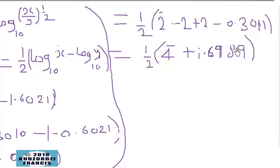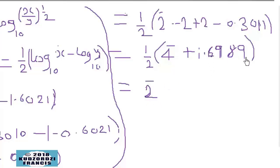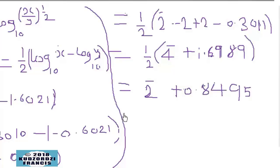Next, we divide. Bar 4 divided by 2 gives us bar 2. Then 1.6989 divided by 2 gives us 0.84945. We can now rewrite the answer as bar 2 point 84945.